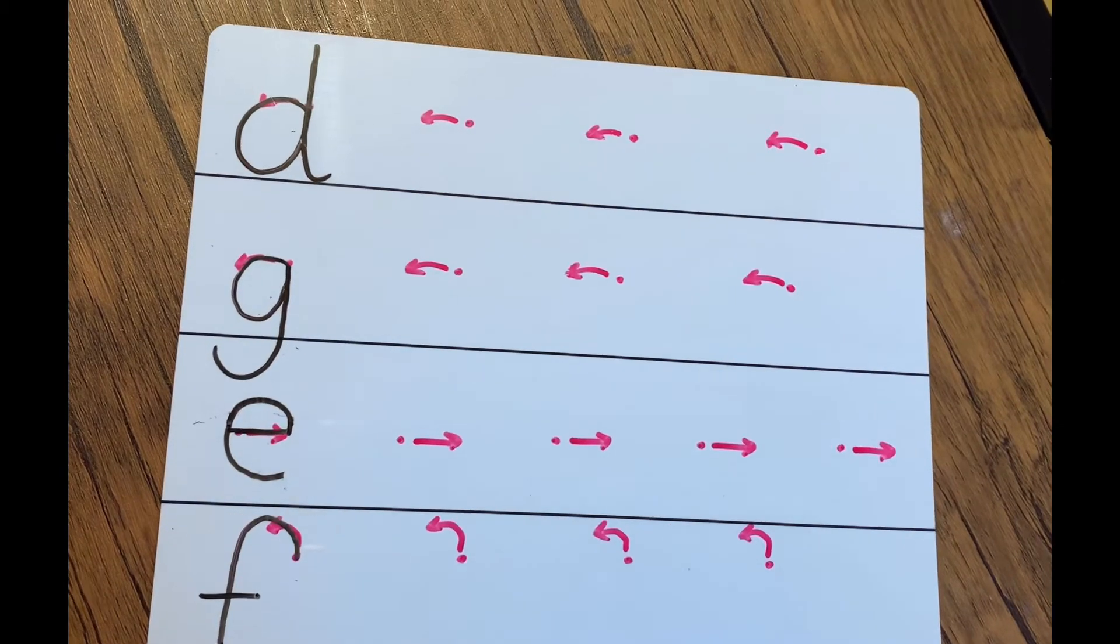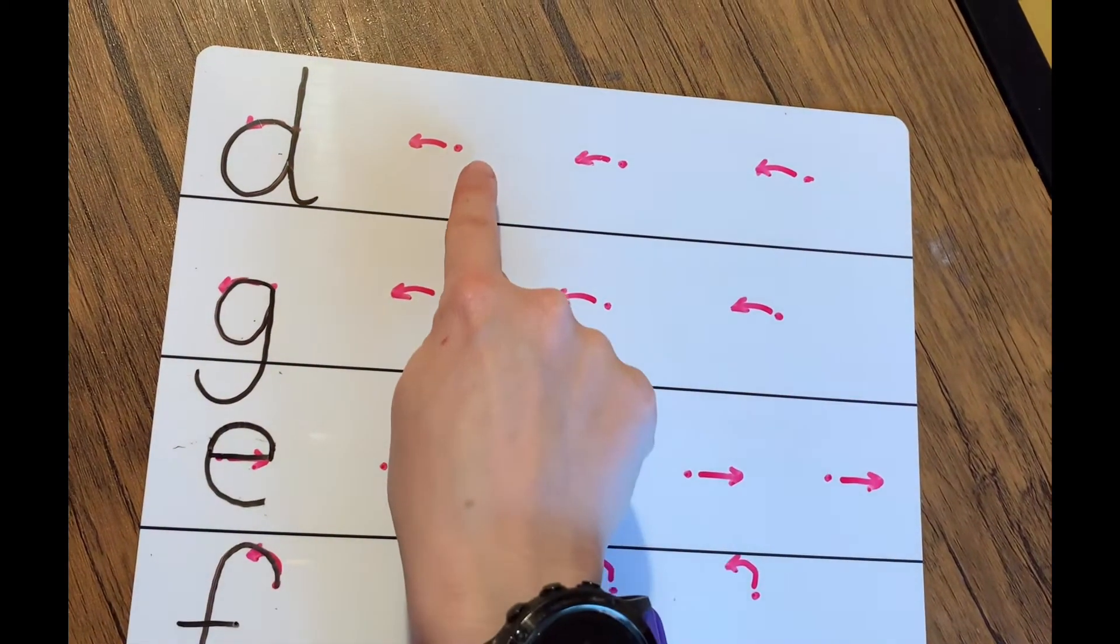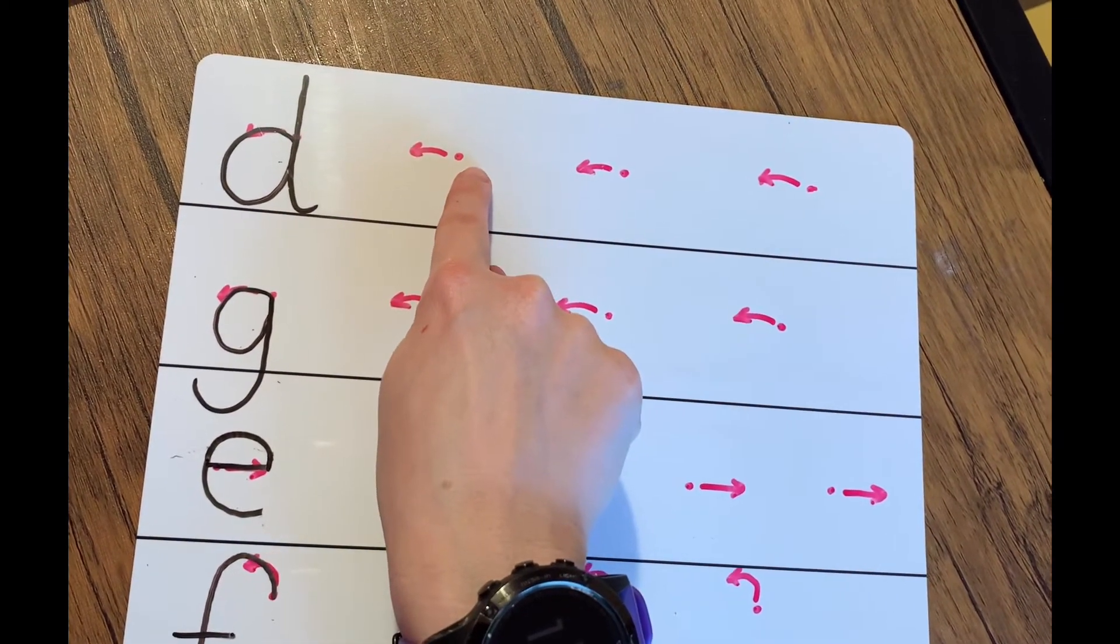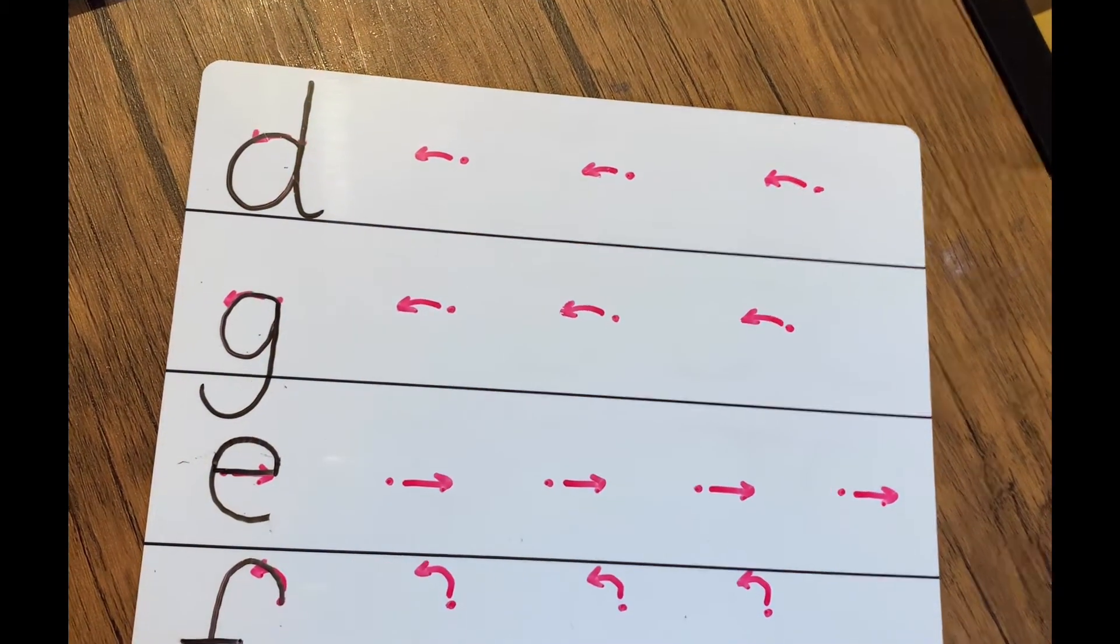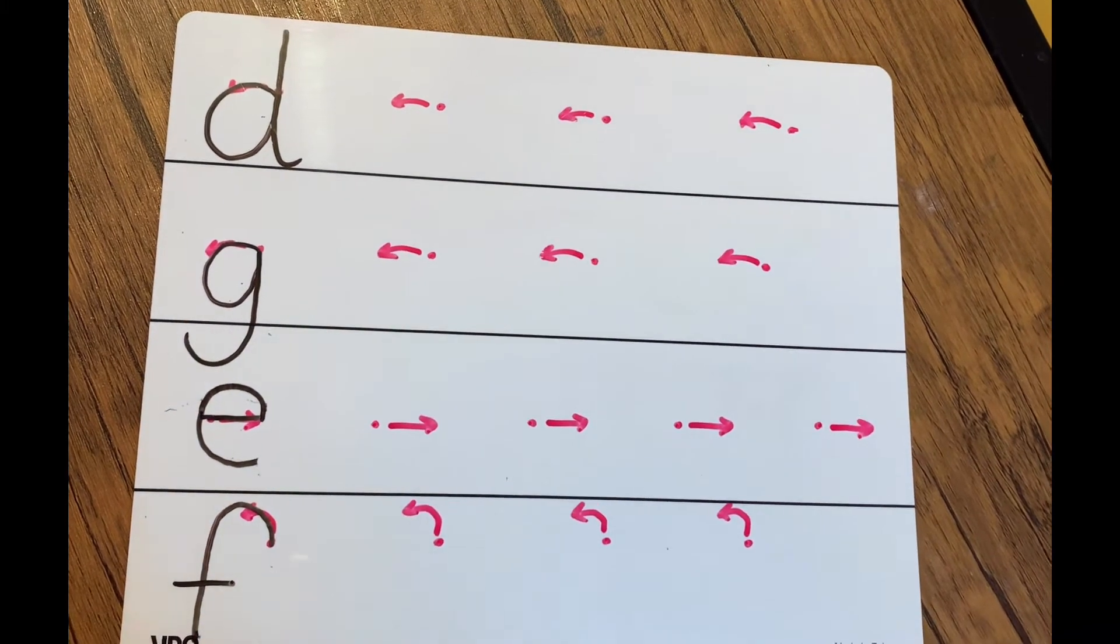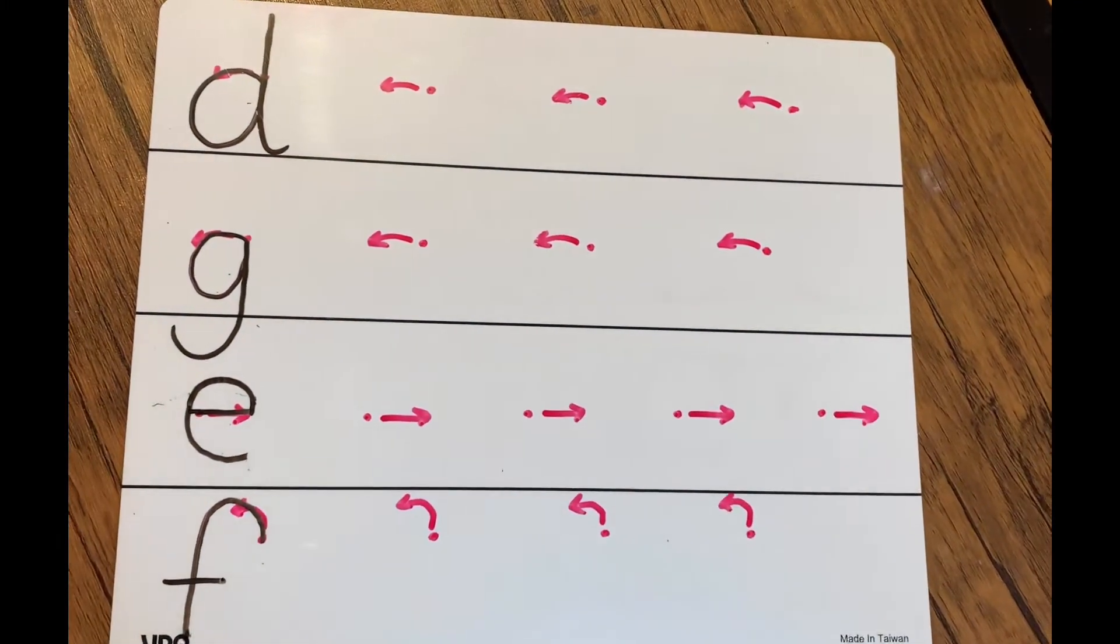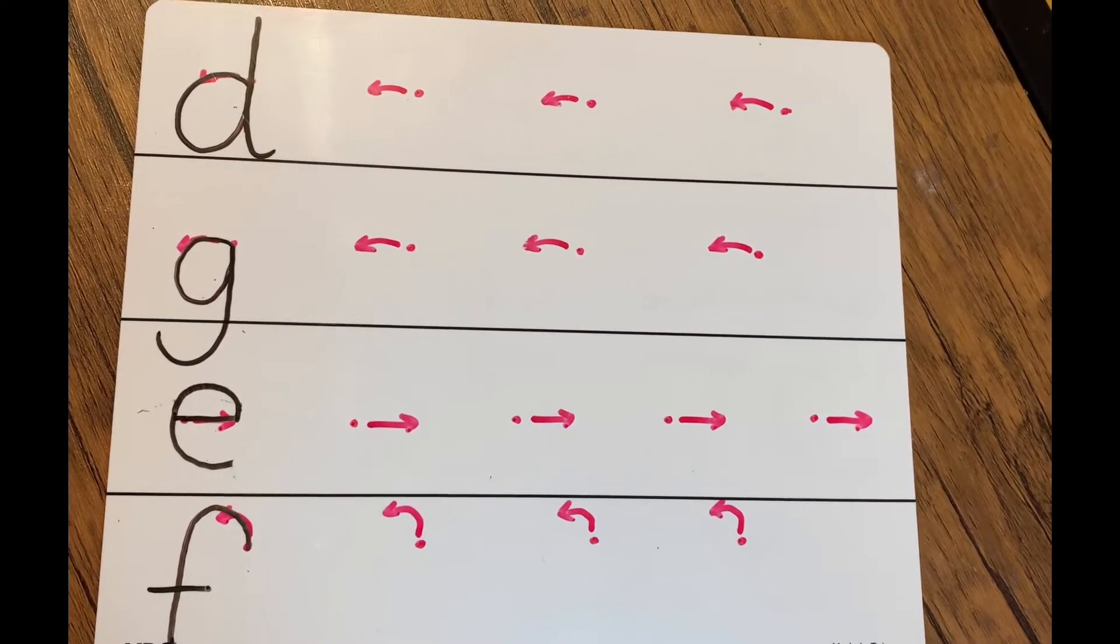So each and every one of these letters begins at the top right and it follows the arrow in the anti-clockwise direction, which means it doesn't go in the same direction as the clock hands do.